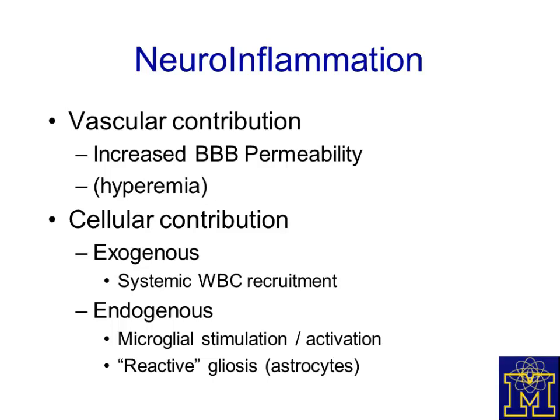There are certainly cellular contributions to inflammation within the nervous system. These consist of exogenous cells — largely systemically trafficking white blood cells and phagocytes recruited across the blood-brain barrier into the brain substance. But in the brain, there are also endogenous cells that become transformed or activated when neuroinflammation is present — microglial cells that hypertrophy and activate, and so-called reactive astrocytes responsible for changes we refer to as gliosis.